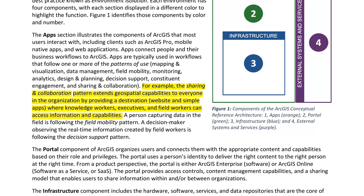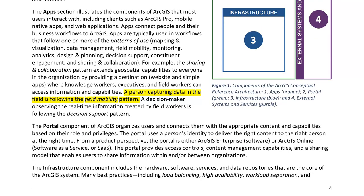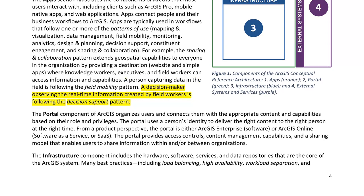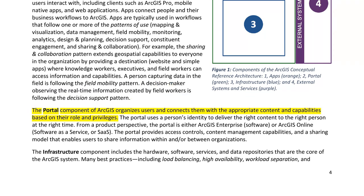For example, the sharing and collaboration pattern extends geospatial capabilities to everyone in the organization by providing a destination — website and simple apps — where knowledge workers, executives, and field workers can access information and capabilities. A person capturing data in the field is following the field mobility pattern. A decision maker observing real-time information created by field workers is following the decision support pattern. The portal component of ArcGIS organizes users and connects them with appropriate content and capabilities based on their role and privileges.